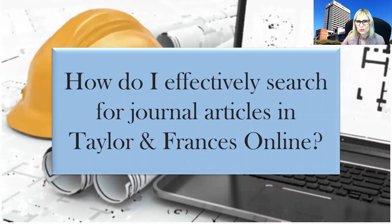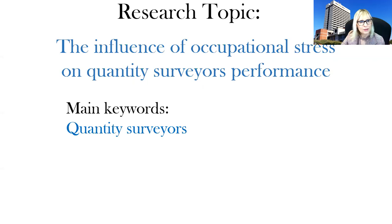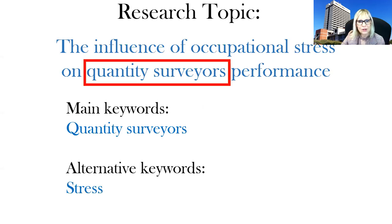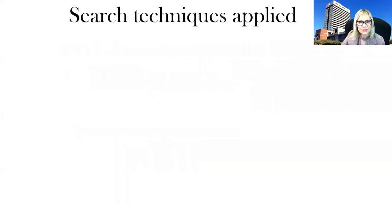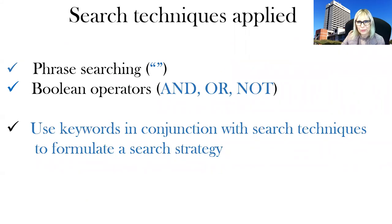How do I effectively search for journal articles in Taylor & Francis online? Looking at the research topic — the influence of occupational stress on quantity surveyors' performance — I selected from this topic the main keywords: 'quantity surveyors' as a phrase, and the alternative keyword 'stress'. I will apply these using phrase searching and Boolean operators to form a search strategy.